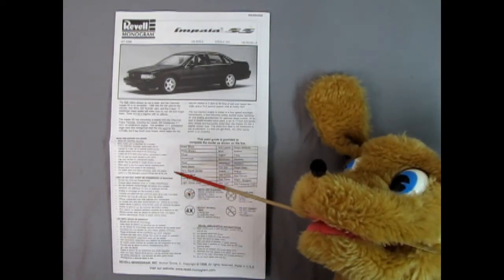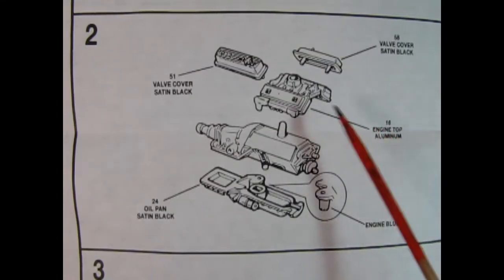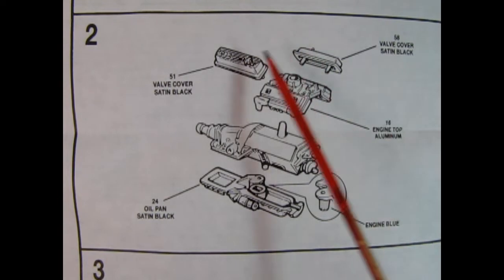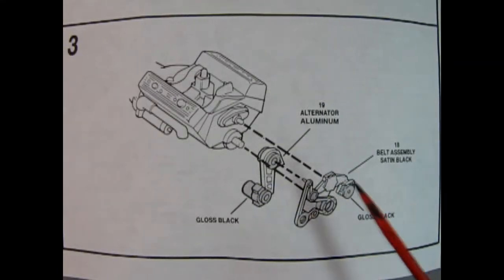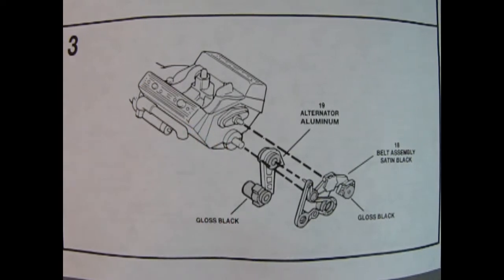Let's take a look at our first steps. With the Revell monogram instruction sheets we get a lot of pictures but not too much going on. Here we have our right and left hand side engine half with the transmission for step number one. In step number two we can see the top of the engine being glued on so this is our cylinder heads and our intake manifold then we've got our valve covers and our oil pan going on and it does say to paint the oil filter with the engine blue. Panel three shows our alternator and the bracket going on and then our belt assembly going onto the engine block. Fairly simplistic.